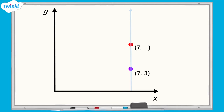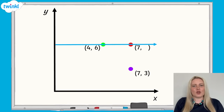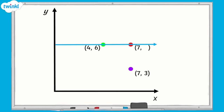Let's now reveal the position of another labelled point on the grid. This green point has coordinates of 4, 6. If we look up the y-axis, we can see that the green and red points are in line with each other on the y-axis. This means that both points share the same coordinate on the y-axis, as they are the same distance up the y-axis. The y-axis coordinate is 6, which means our red point will also have a y-axis coordinate of 6.